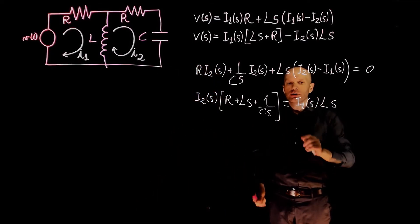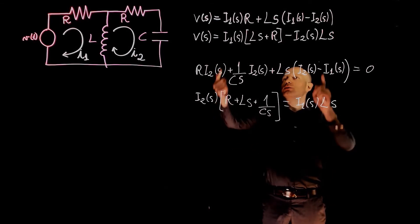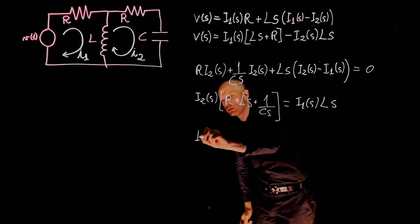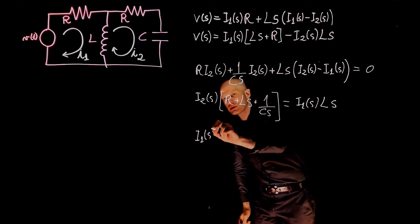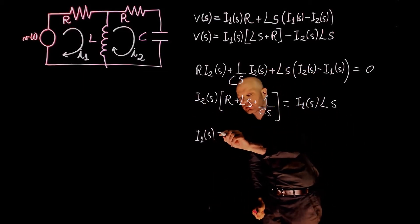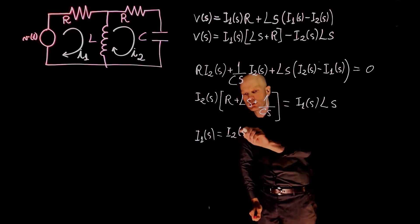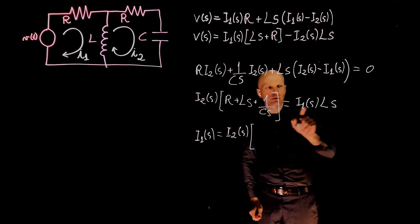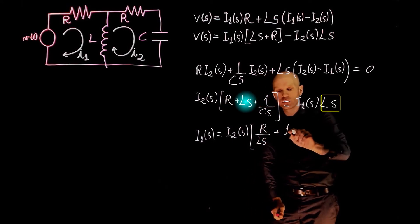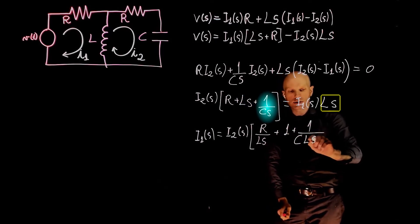Since we are interested in the relation between I2 and V(S), we can isolate I1 and replace it in the first equation. The expression for I1(S) is that side of the equation divided by Ls, which gives I1(S) = I2(S) times (1 + R/Ls + 1/(LCs²)).